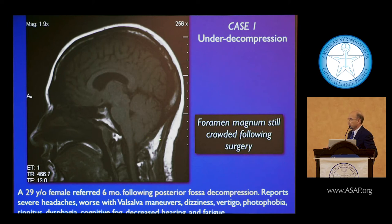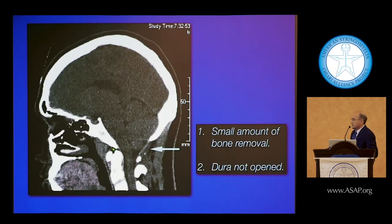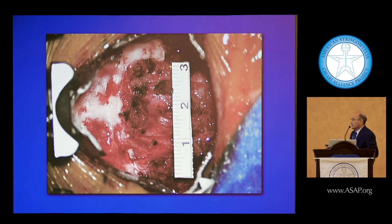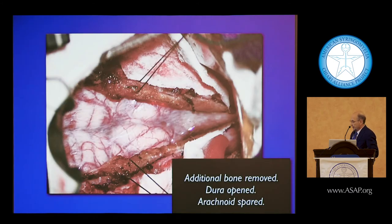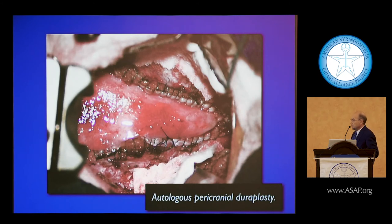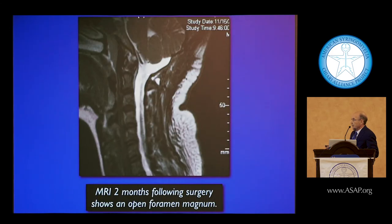Looking at under-decompression: an extradural decompression may allow some people to do well for three to six months, then scar builds up, tissues get tense and don't expand, and symptoms return. This 29-year-old came back with worse headache, dizziness, and vertigo. Her CT showed the dura was not opened and the bony opening was small — about 11 to 12 millimeters. I opened the dura — which had not been opened previously — and sewed in a patch of the patient's own pericranium with non-absorbable fine stitching. Adequate CSF bathing around the area prevents the two surfaces from becoming adhesive.